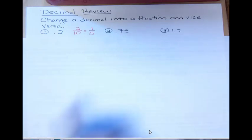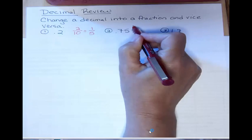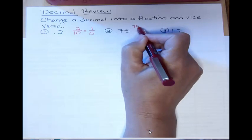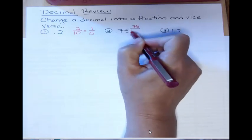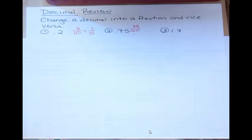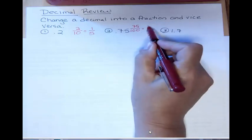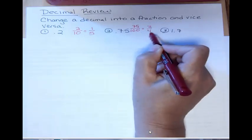Now 0.75 has two decimal places. So I put the 75 on top. And then because I have two decimal places, I have two zeros. 100 is another power of 10, in this case two zeros. And then 75 out of 100 is 3 quarters or 3 fourths as a fraction in lowest terms.